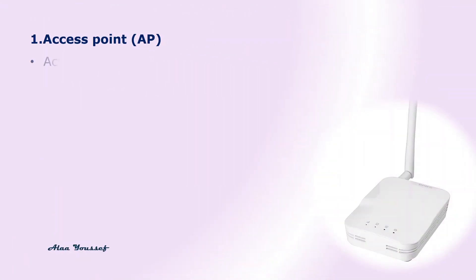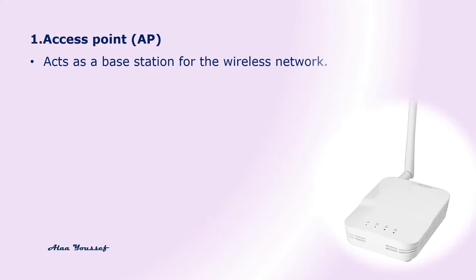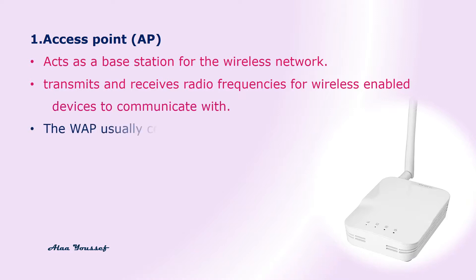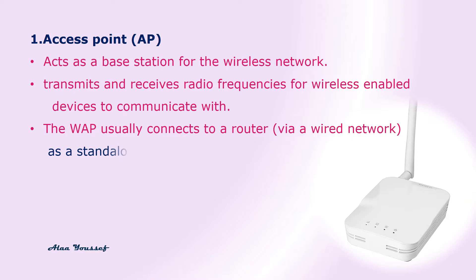An access point acts as a base station for the wireless network. It transmits and receives radio frequencies for wireless enabled devices to communicate with. The wireless access point usually connects to a router via a wired network as a standalone device, or it can be an integral component of the router itself.